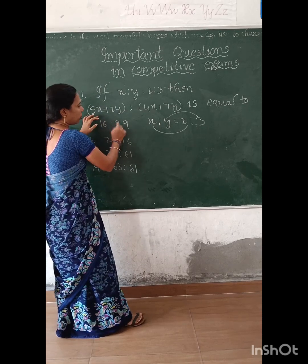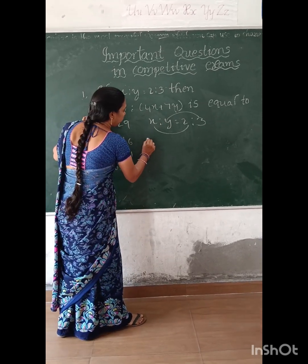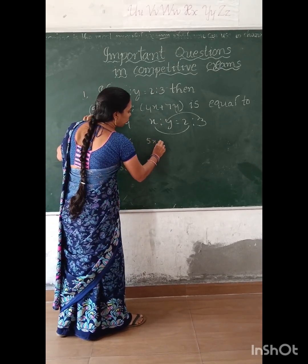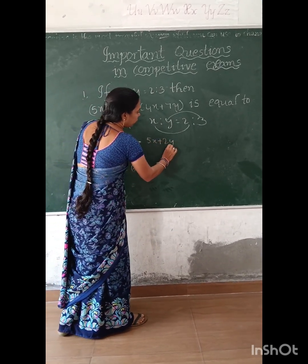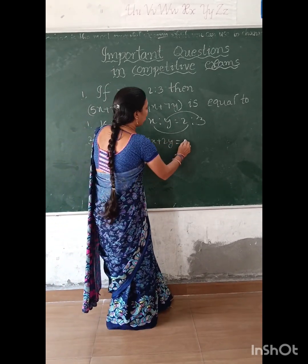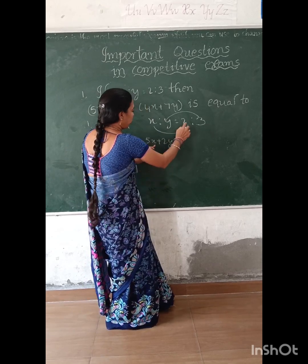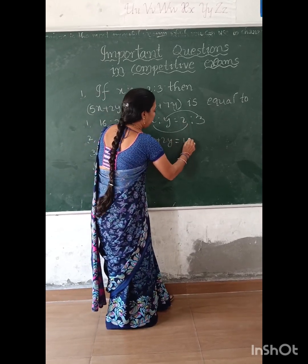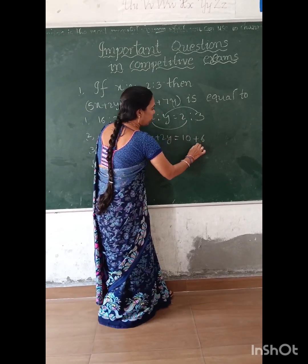So then we substitute into the expression. 5x plus 2y. This is the substitution: 5 times 2 is 10, plus 2 times 3 is 6.